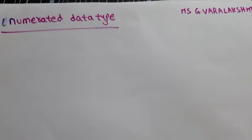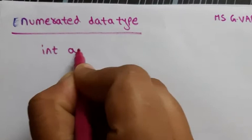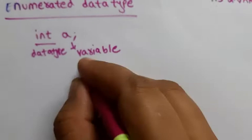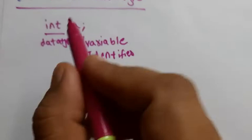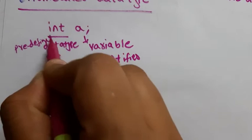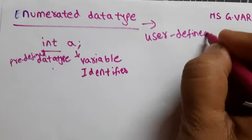Let us discuss a concept called enumerated data types. The name itself says it's a data type. Comparing with int: int is a predefined data type. Enumerated data type is not predefined — it is a user-defined data type. You can define your own data type. That is what an enumerated data type is, and that's why we call it user-defined.